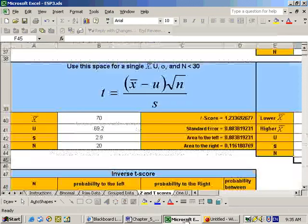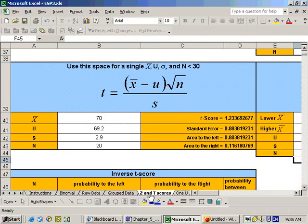So to use the T-score, go to the Excel sheet, go to the Z and T-score sheet, and scroll down until you see this area right here. It says use this space for a single X-bar, mu, and sigma or S, population or sample standard deviation, and when your sample size is less than 30.